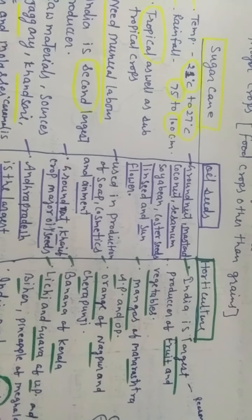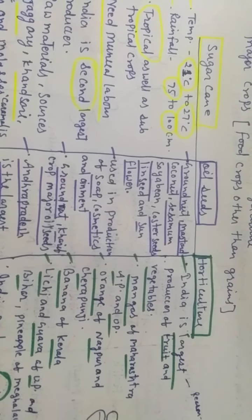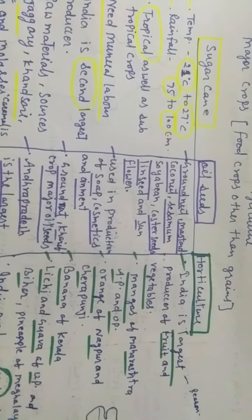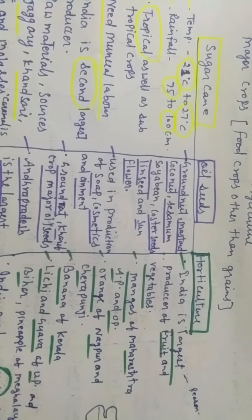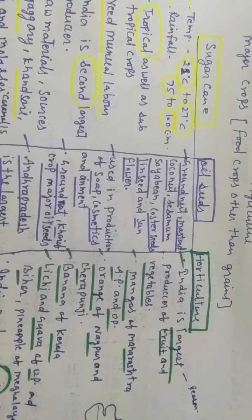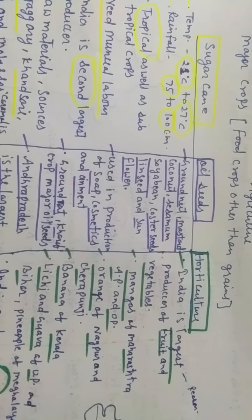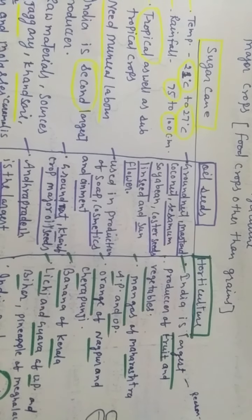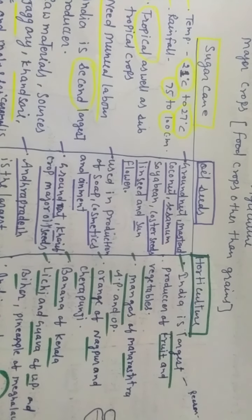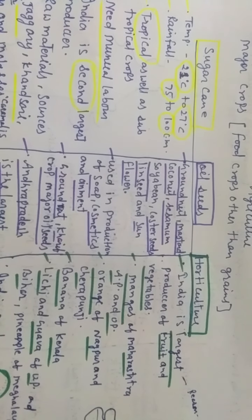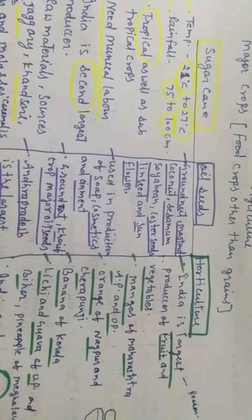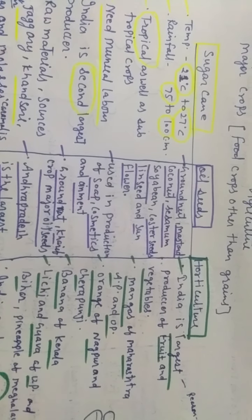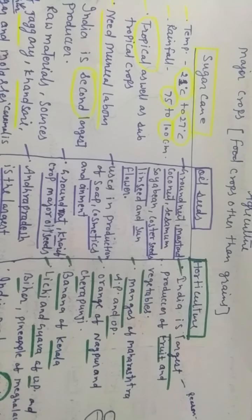Our next crop is oilseed. Oilseed means many kinds of seeds from which we get oil. These are groundnut, mustard, coconut, shisham, soybean, castor seeds, linseed, and sunflower. It is used in production of soap, cosmetics, and ointments, along with oil which we use in our food products.